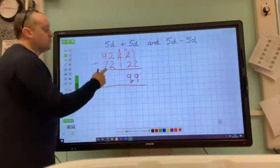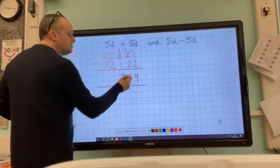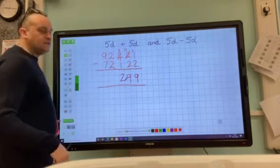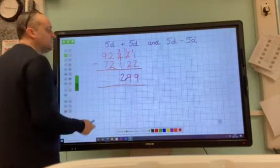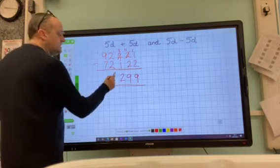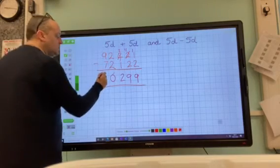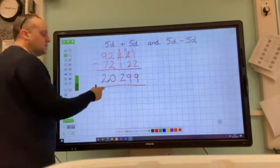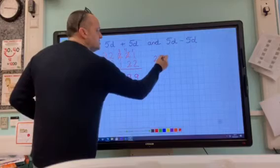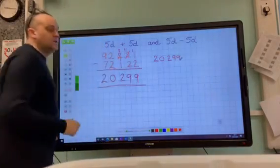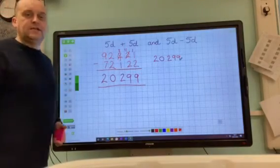Three take away one, we can do this one. Three take away one is two, so we're now at 299. Not carrying anything across still. Two take away two, zero. Nine take away seven is two. So your answer to that one is 20,299.